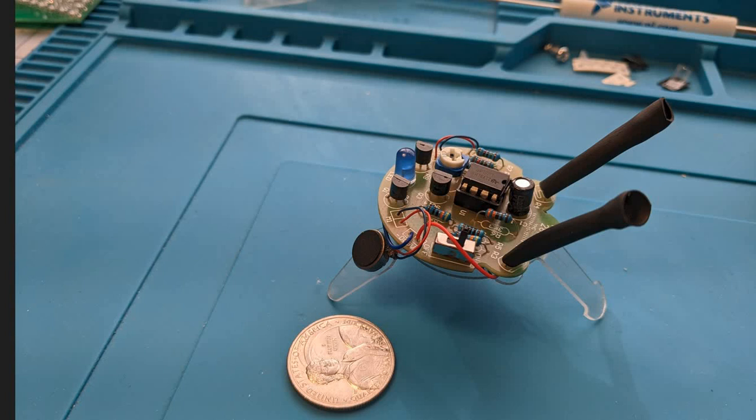This one is a little electronic bug with two light sensors in the front. When you shine a light into one of these, it shies away. These little vibrators on the back move it away from the light, and it has a little LED that's kind of like a heartbeat.